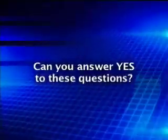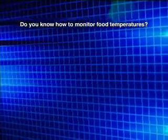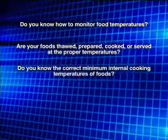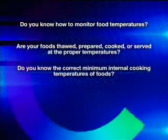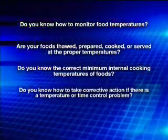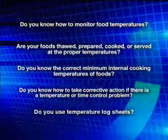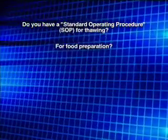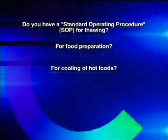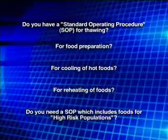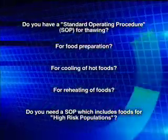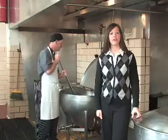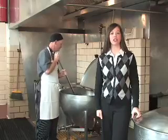Can you answer yes to these questions? Do you know how to monitor food temperatures? Are your foods thawed, prepared, cooked, or served at the proper temperatures? Do you know the correct minimum internal cooking temperatures? Do you know how to take corrective action if there is a temperature or time control problem? Do you use temperature log sheets? Do you have standard operating procedures for thawing, food preparation, cooling of hot foods, reheating foods, and for high-risk populations? If you answered no to any of these questions, review your food safety procedures. For further information, contact your local health department.